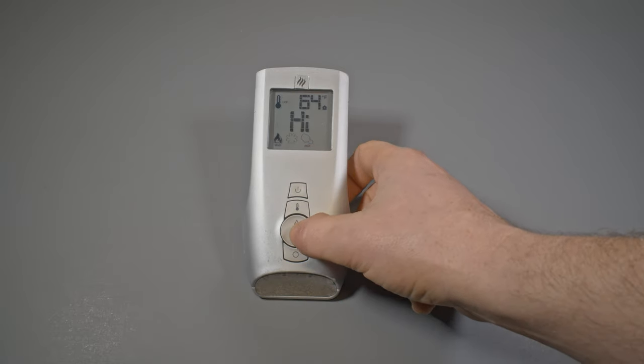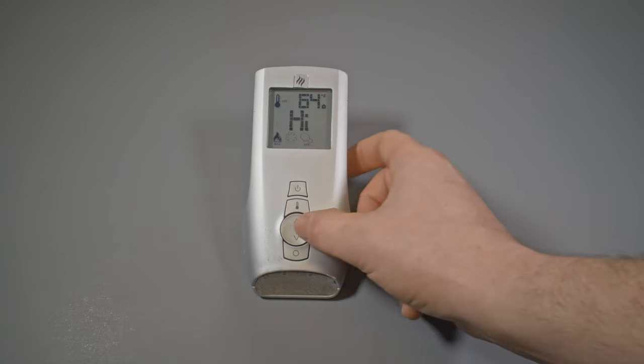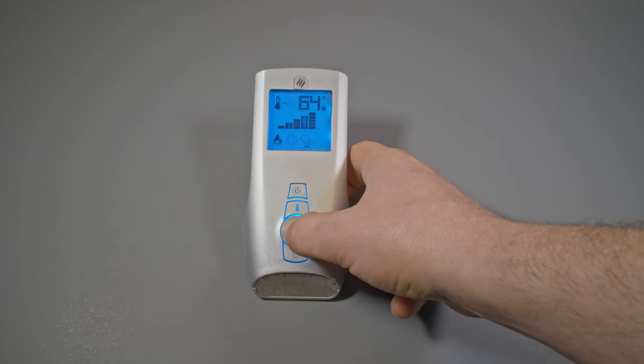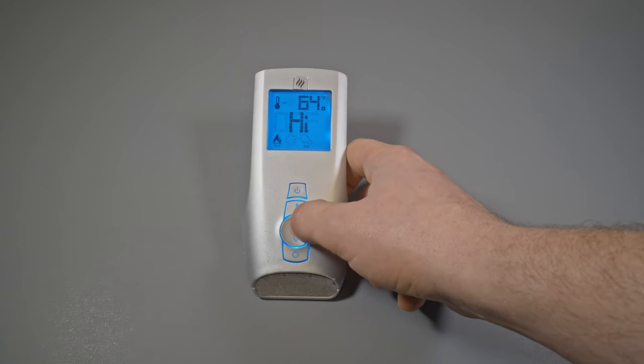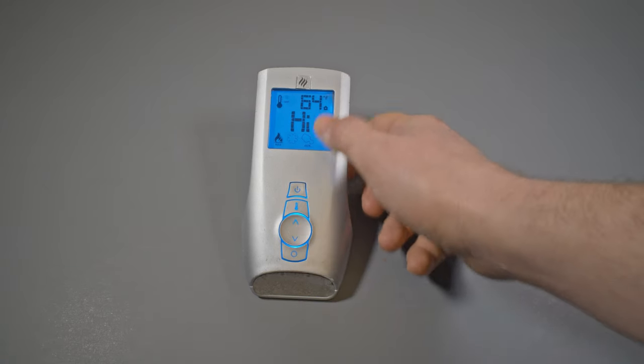Then my up and down buttons will change the flame height, and this is based off of manual mode currently. So that can get my flames low and then high.